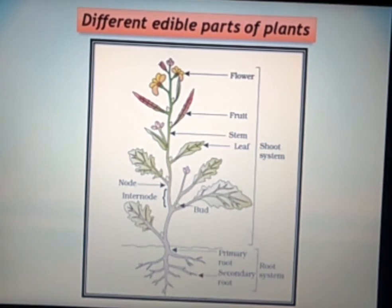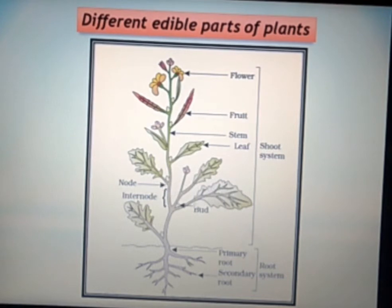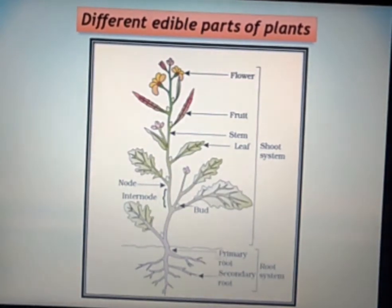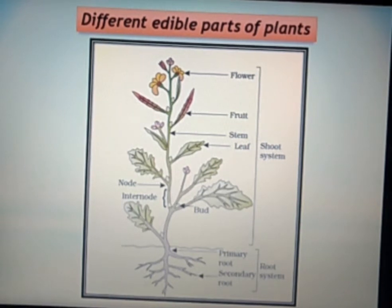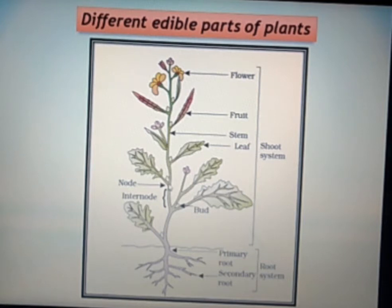In this slide I have mentioned the different edible parts of plants. There is the flower, fruit, stem, leaf, and node. This upper part is called the shoot system, and the lower part is the root system, which includes the primary root and secondary root. The internode is the distance between two nodes. A node is the part of the plant from which a leaf is generated.